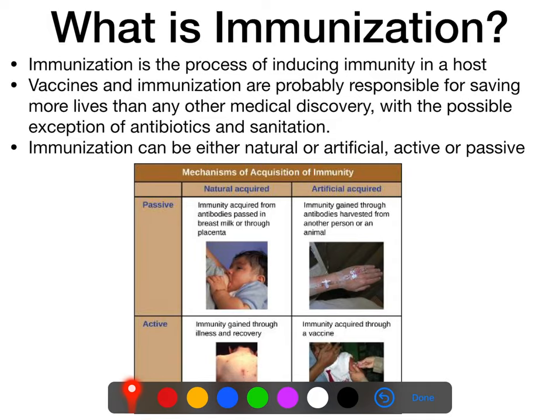With passive immunity, you are borrowing something else's immune system. Your immune system does not learn in any sort of long-term way, but you get the protection temporarily provided to you.